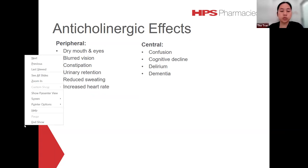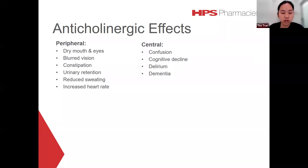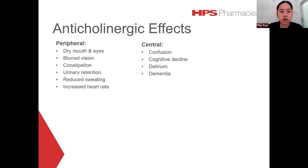The typical effects we think of when we say anticholinergic tend to include peripheral effects such as dry mouth, dry eyes, blurred vision, constipation, urinary retention, reduced sweating, and increased heart rate. There are also potentially more serious effects such as increased risk of confusion, cognitive decline, delirium, and dementia, which increase the risk of falls, fractures, and death in elderly populations.